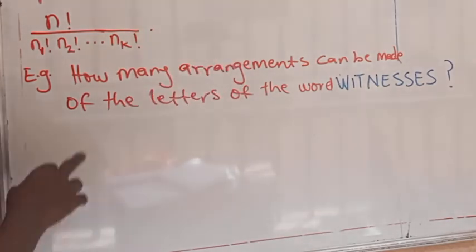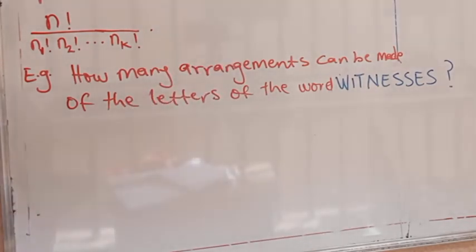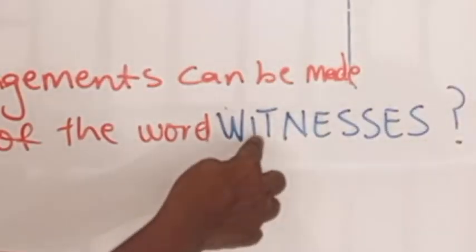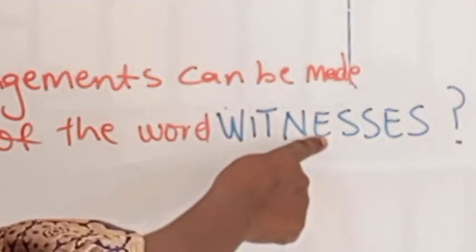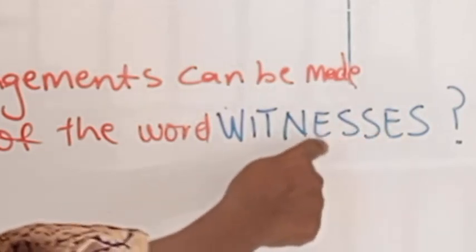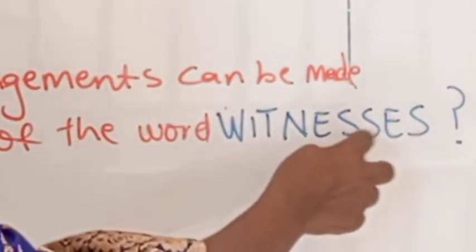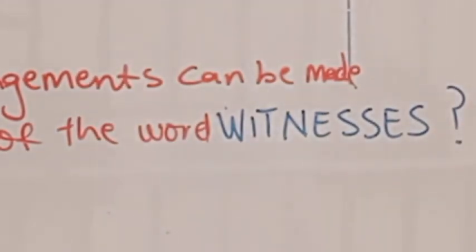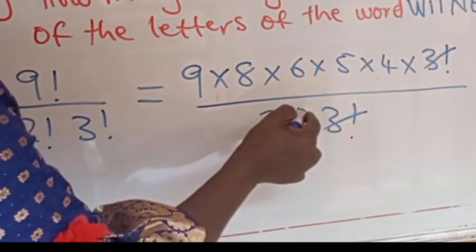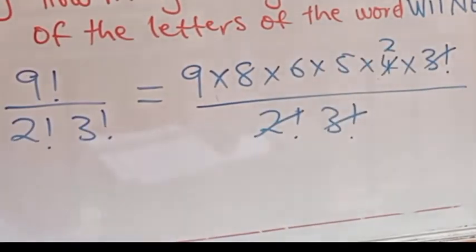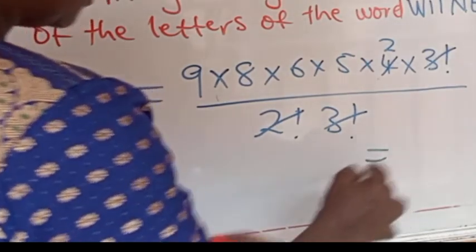How many arrangements can be made of the letters of the word WITNESSES? There are nine letters. We have E appearing twice (n1 equals two) and S appearing three times (n2 equals three). So the answer is nine factorial over two factorial times three factorial. Expanding and simplifying gives the number of arrangements.